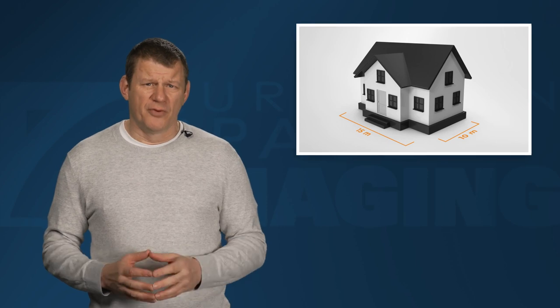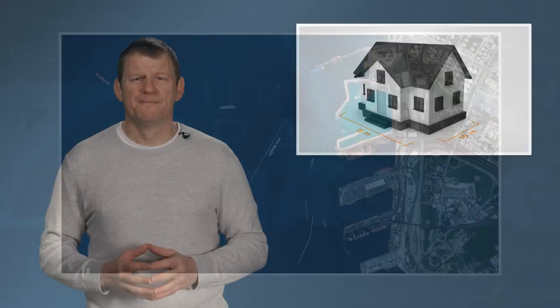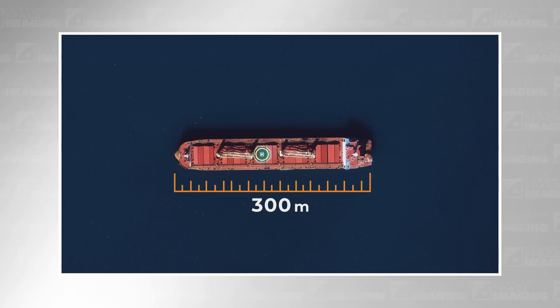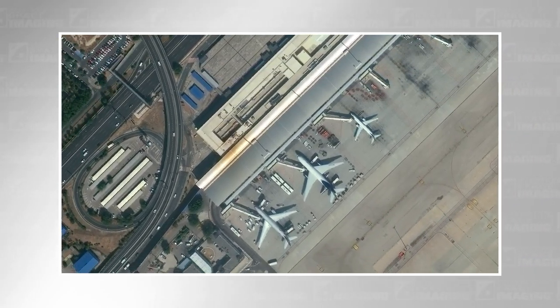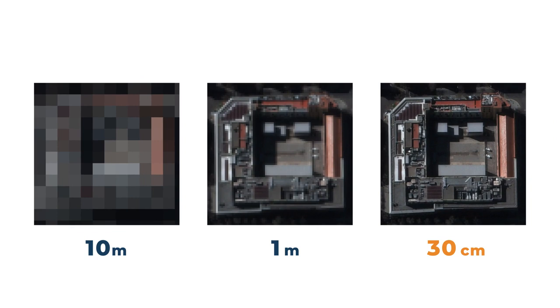Relative accuracy refers to the distances between objects visible in the image. For example, if a ship is exactly 300 meters long, when I measure its length on an image it should scale to be as close to 300 meters as possible. Resolution plays a significant role in the accuracy of satellite imagery — the higher the resolution, the better the display of objects and the relationships to each other.